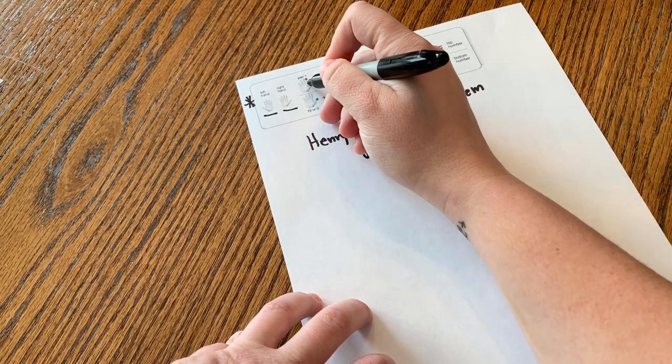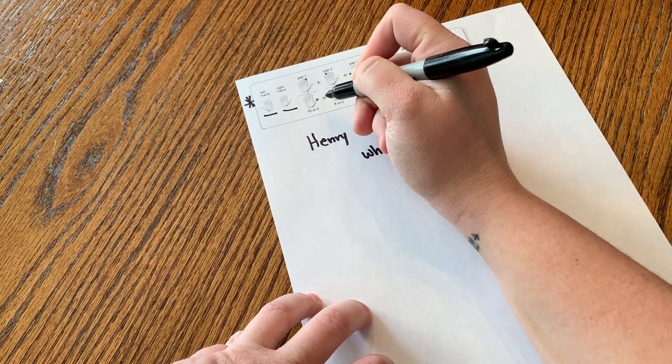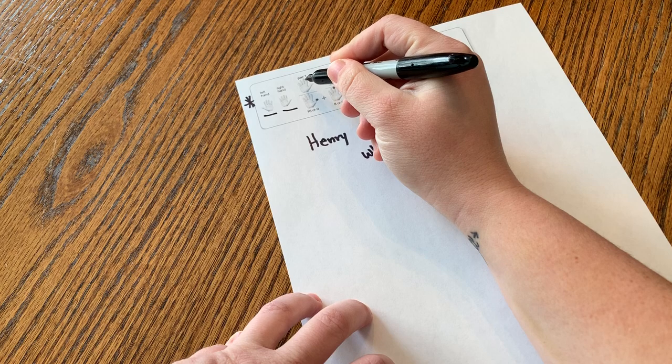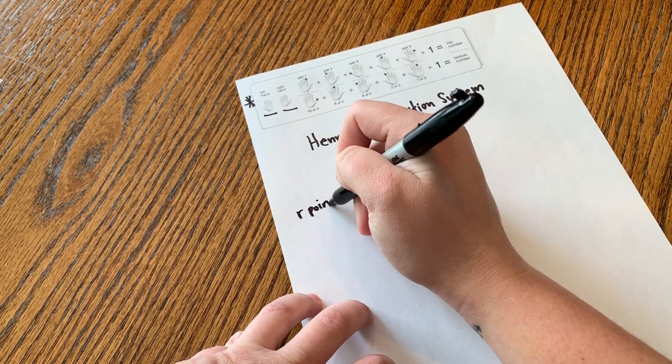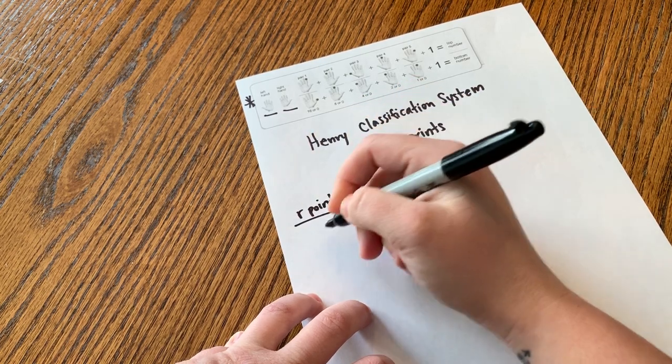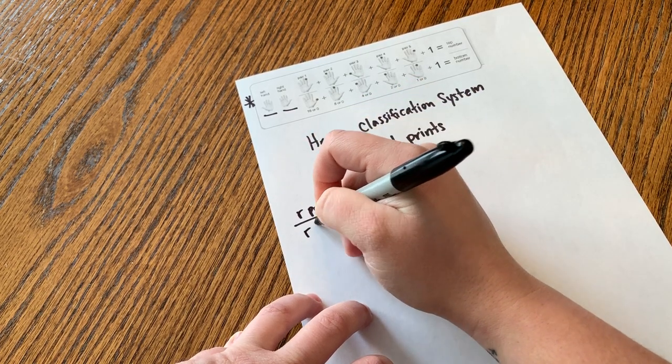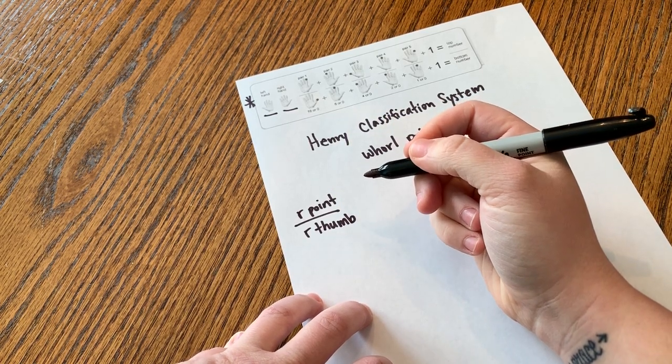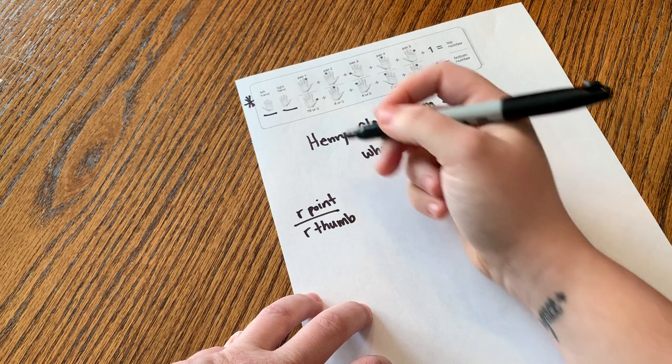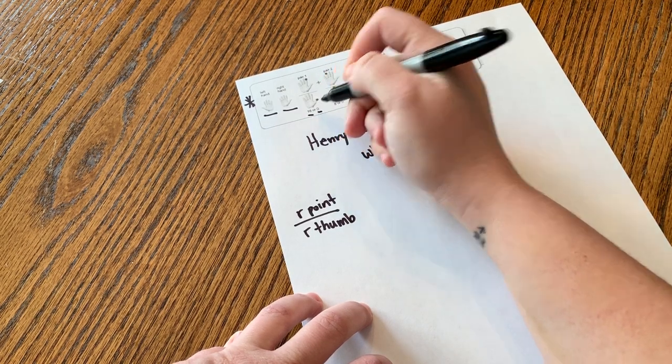Starting with pair one, we're going to look at the right pointer finger over the right thumb. Based on whether or not they have a whorl fingerprint, they'll get either a 16 or a 0.